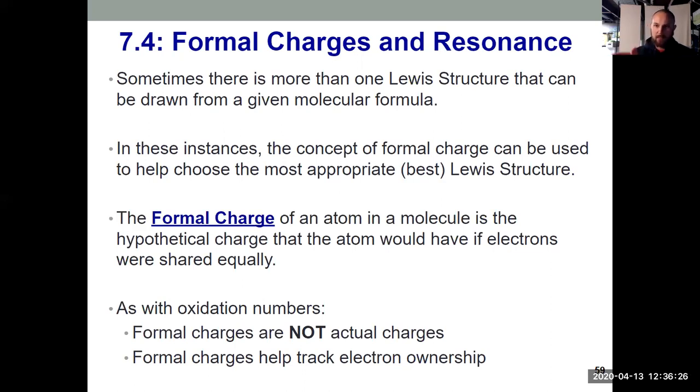Basically, we're just cutting the bonds in half, splitting the electrons. They're not actual charges, they're just helping us track electron ownership, which is kind of the same thing we did with oxidation numbers back in Chapter 4.